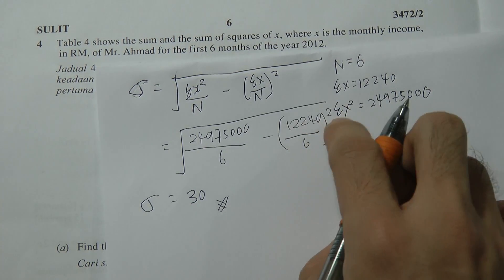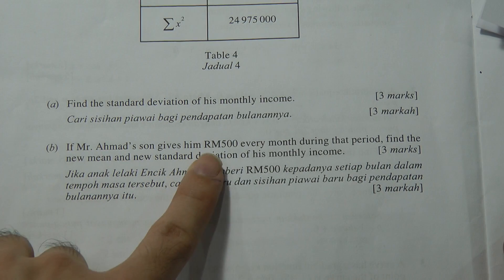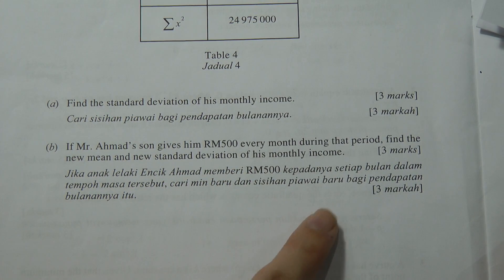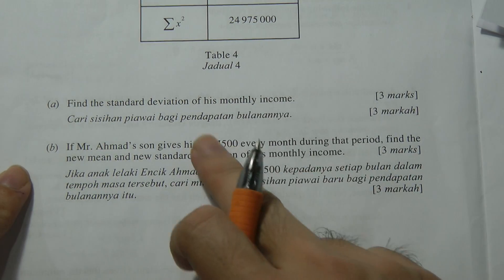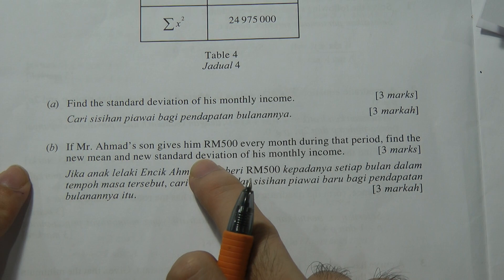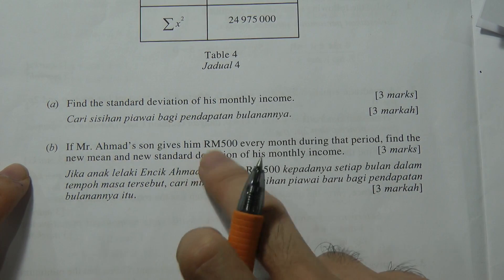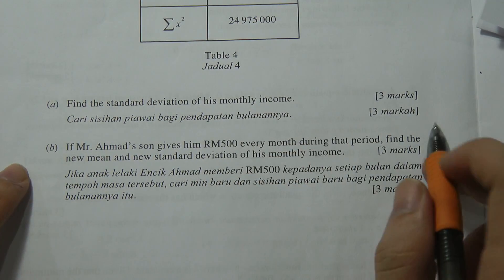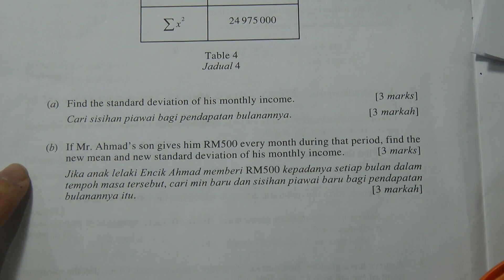For the second part: if Mr. Ahmad's son gives him 500 every month during that period, find the new mean and new standard deviation. When you add 500 every month, this only affects the mean — it does not affect the standard deviation. The standard deviation stays the same when you add or subtract a constant.